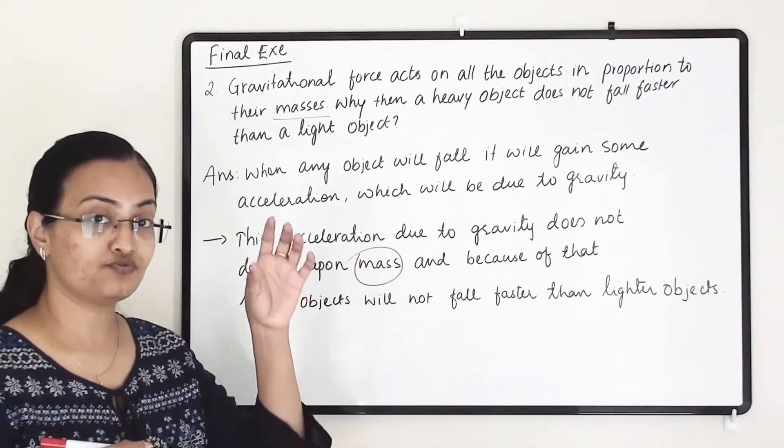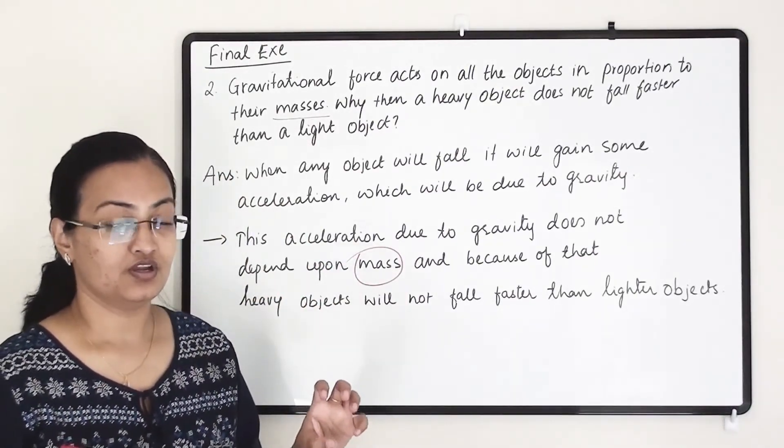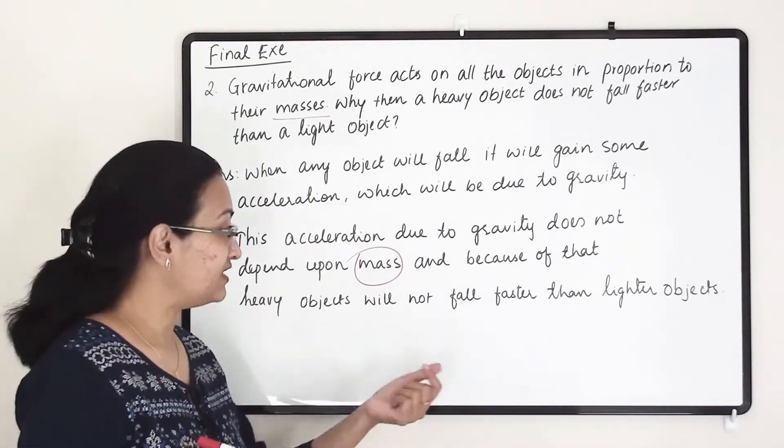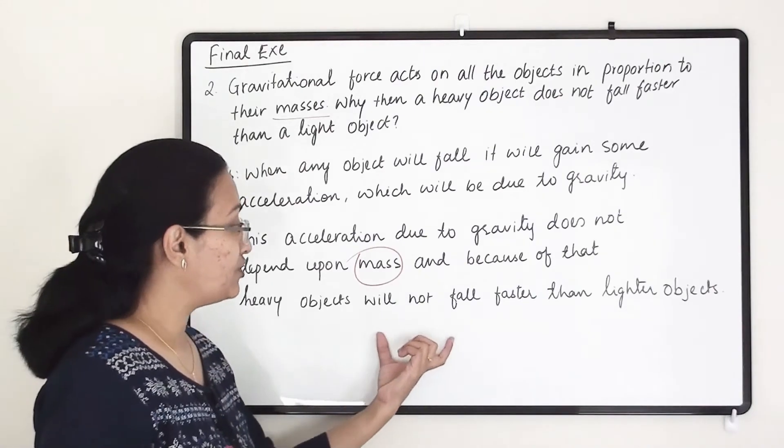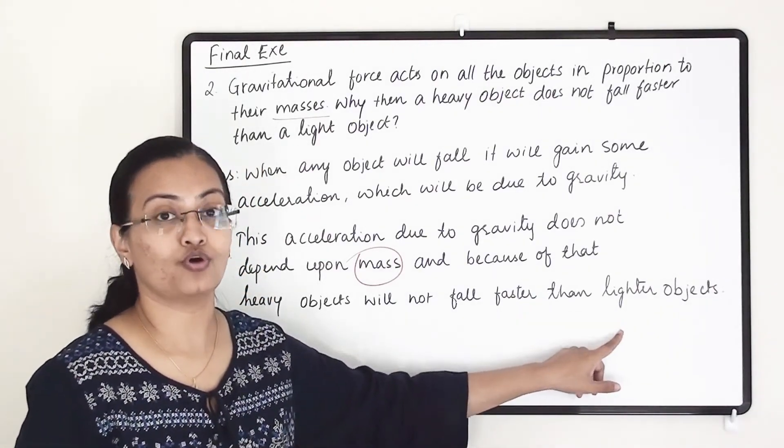While an object is falling, it will gain some acceleration. But that acceleration due to which it is falling is not depending upon mass. And because of that, the heavy object will not fall faster than the lighter object.